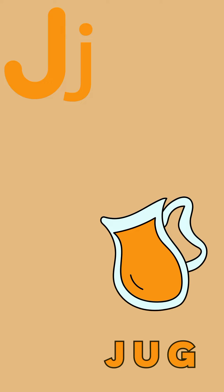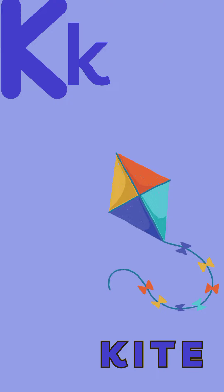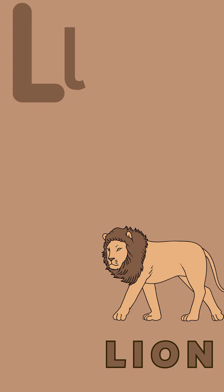J for Jug. J, U, G. Jug. K for Kite. K, I, T, E. Kite. L for Lion. L, I, O, N. Lion.